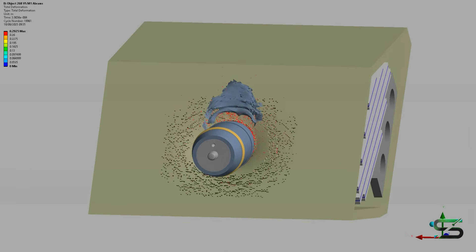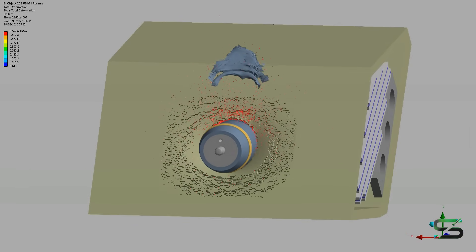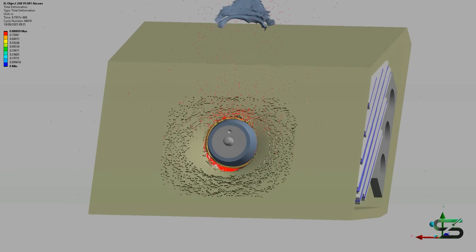The Object 268 is equipped with one of the most powerful Soviet guns, the 152mm M64.